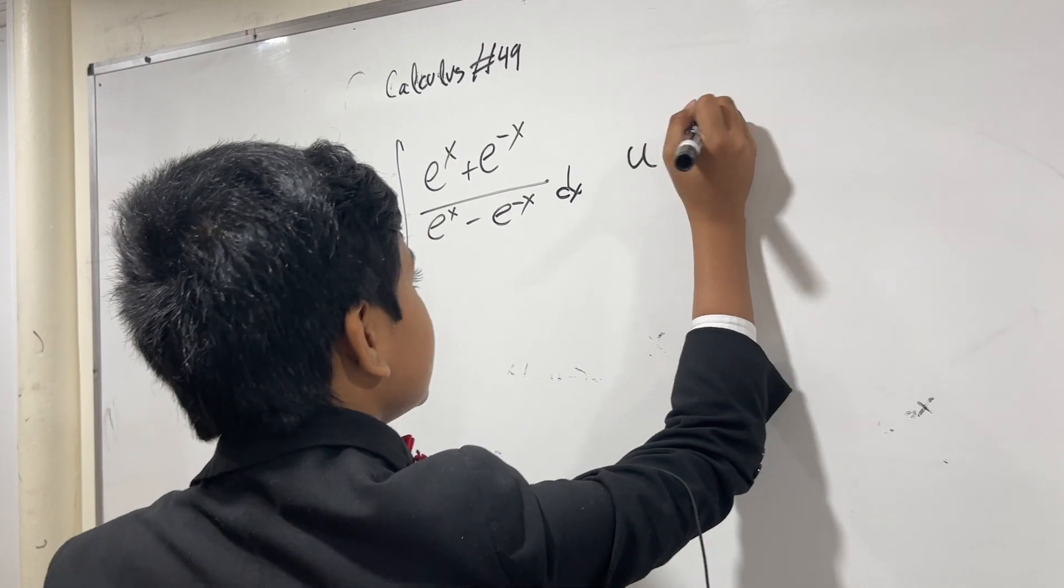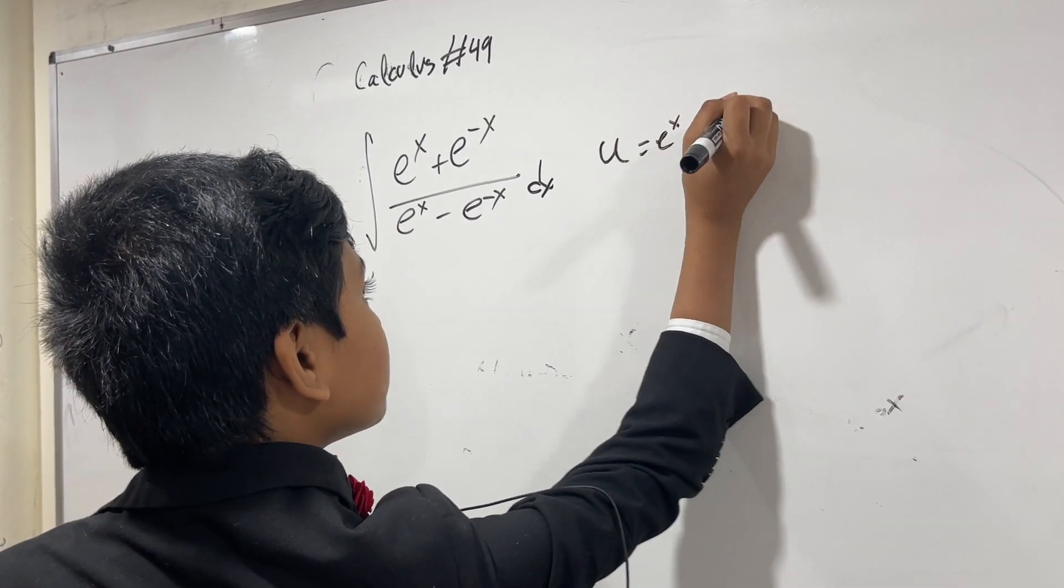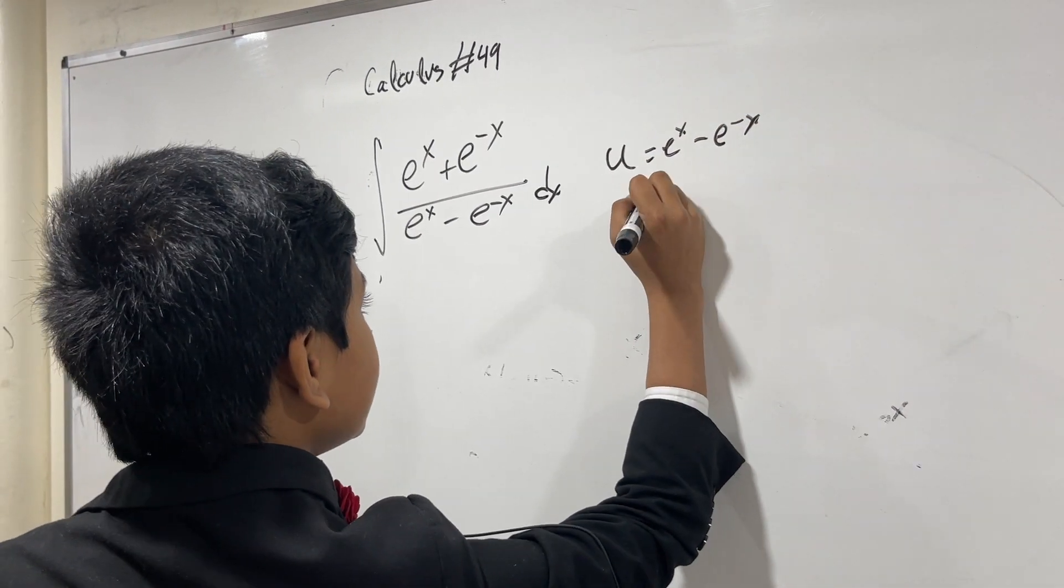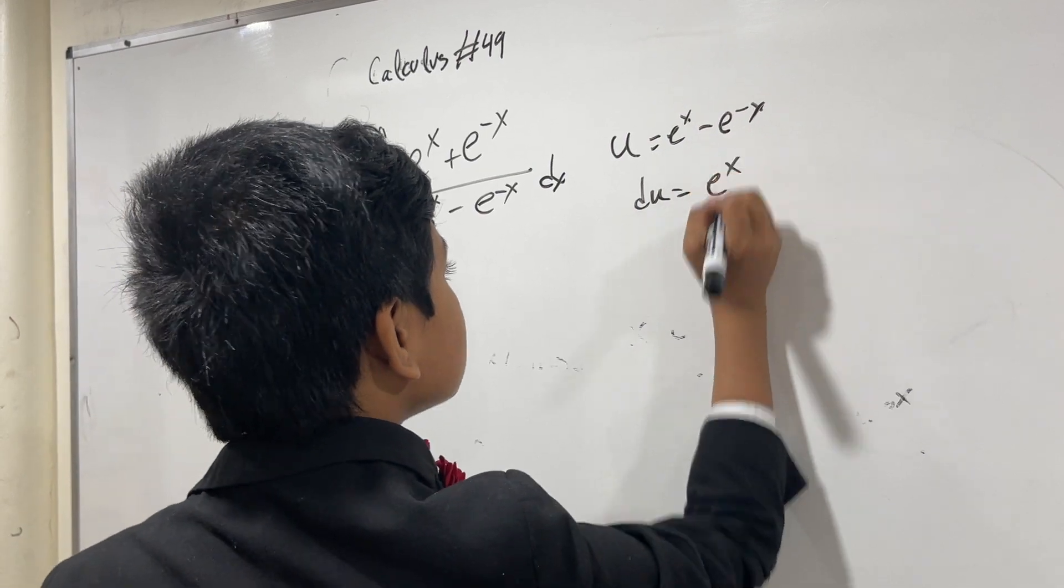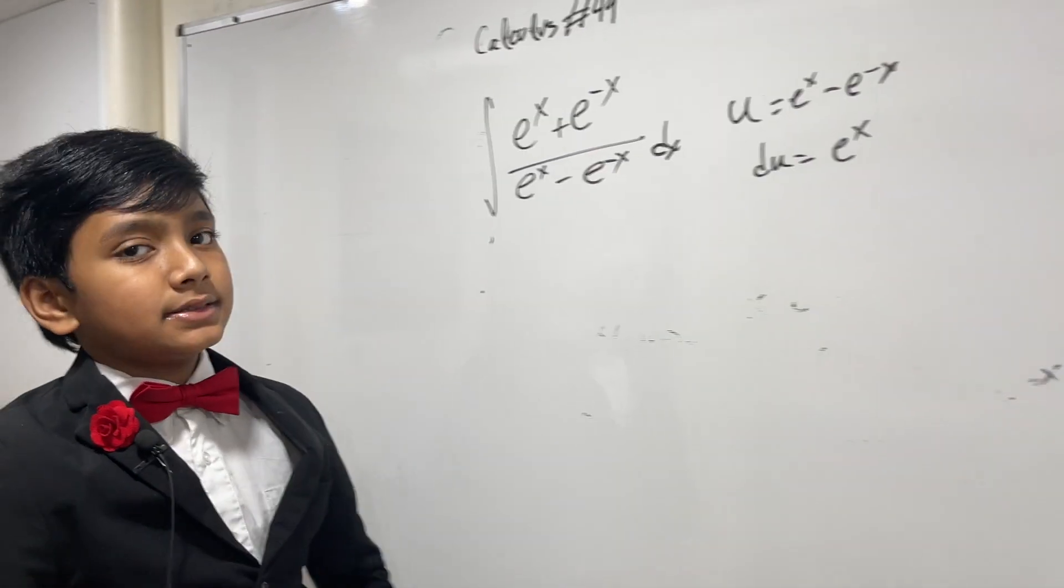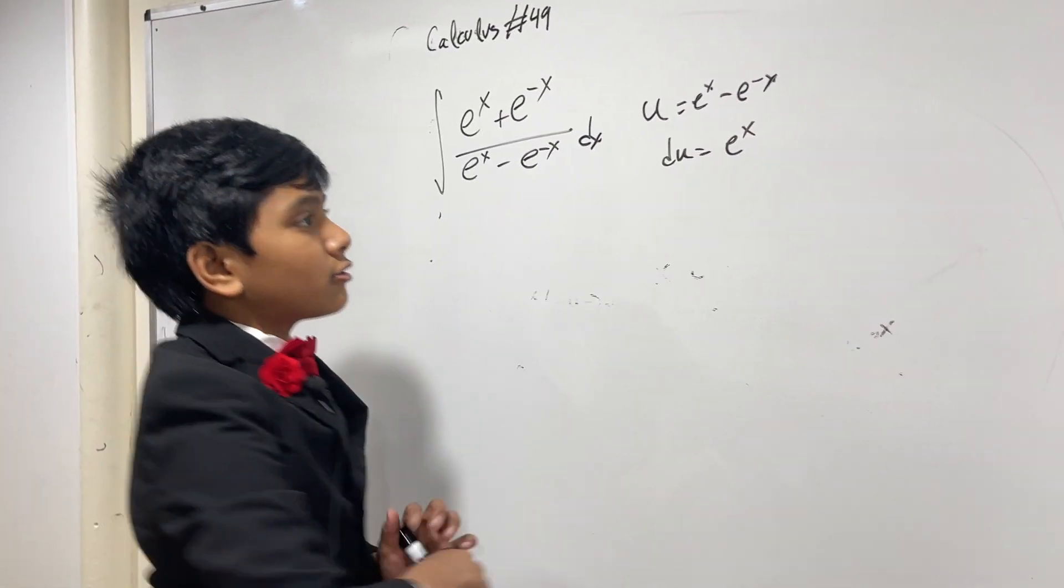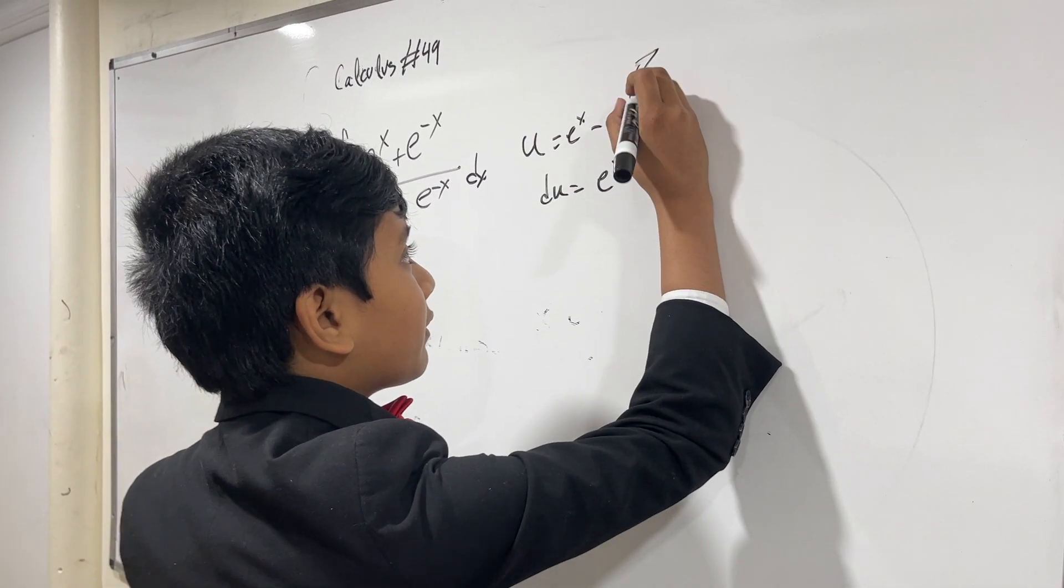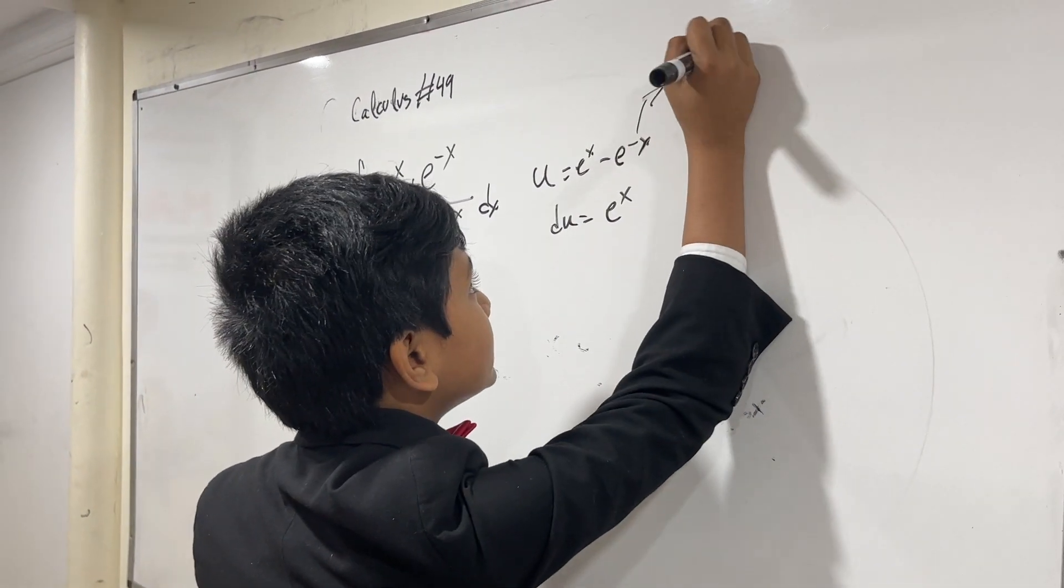Well, u equals e to the x minus e to the minus x. So du is equal to e to the x because the derivative of e to the x is just e to the x. Then taking the derivative of this, which is the derivative of minus x minus 1, so it does minus e to the minus x.